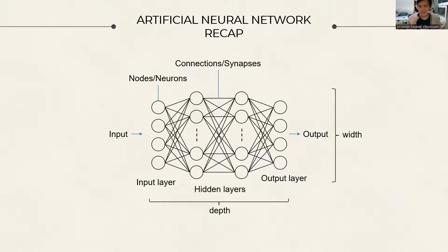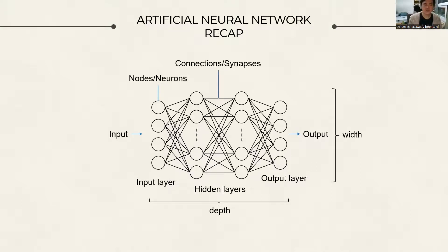In an artificial neural network, we have circles called nodes or neurons, divided into layers. Each layer is connected to the next with what we call connections or synapses, just like real brains. The first layer is the input layer, and each layer influences the number in the next. There are intermediate hidden layers, and the final layer is the output layer — the output of the program. The number of layers we call depth, and the maximum number of neurons in a given layer we call width.